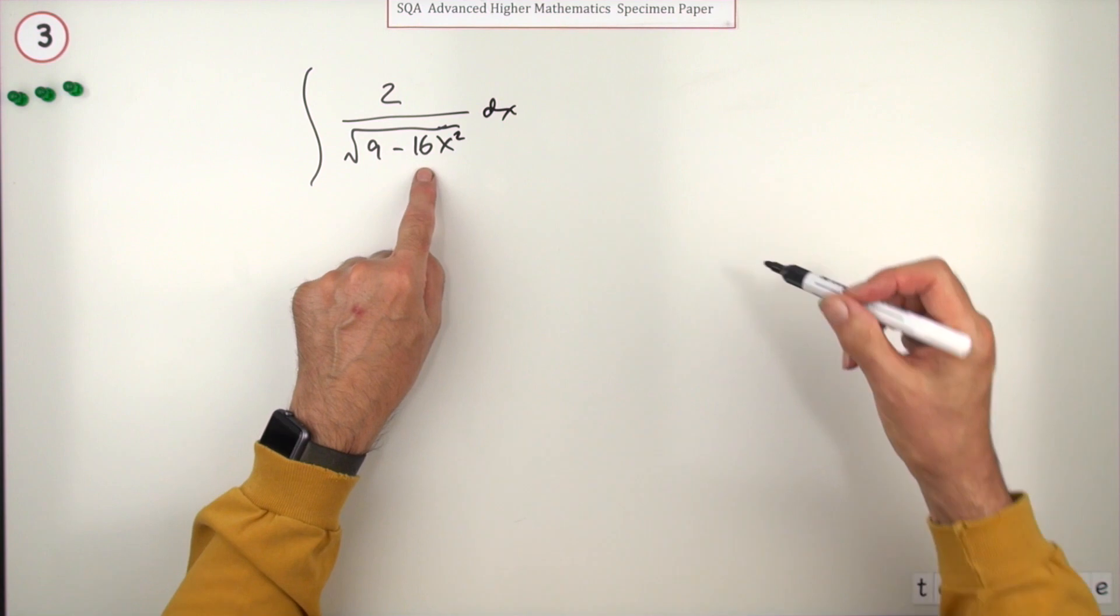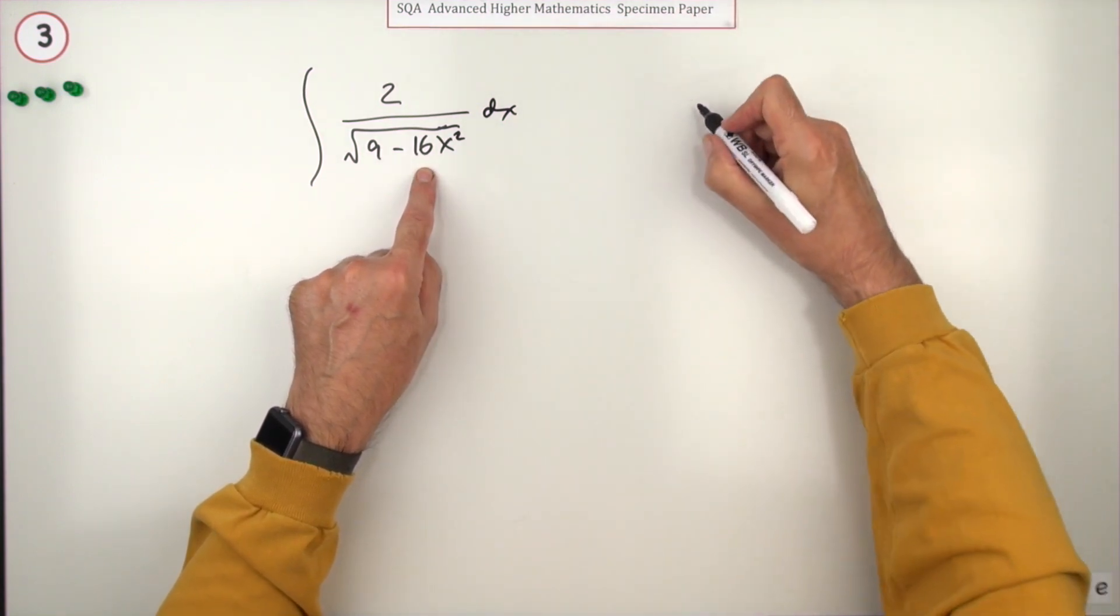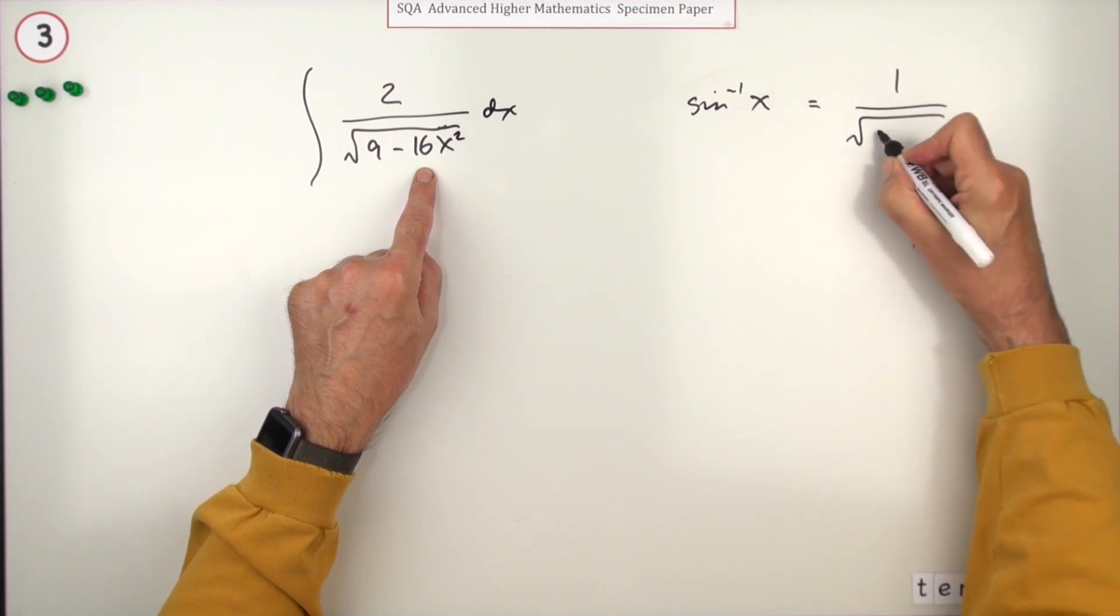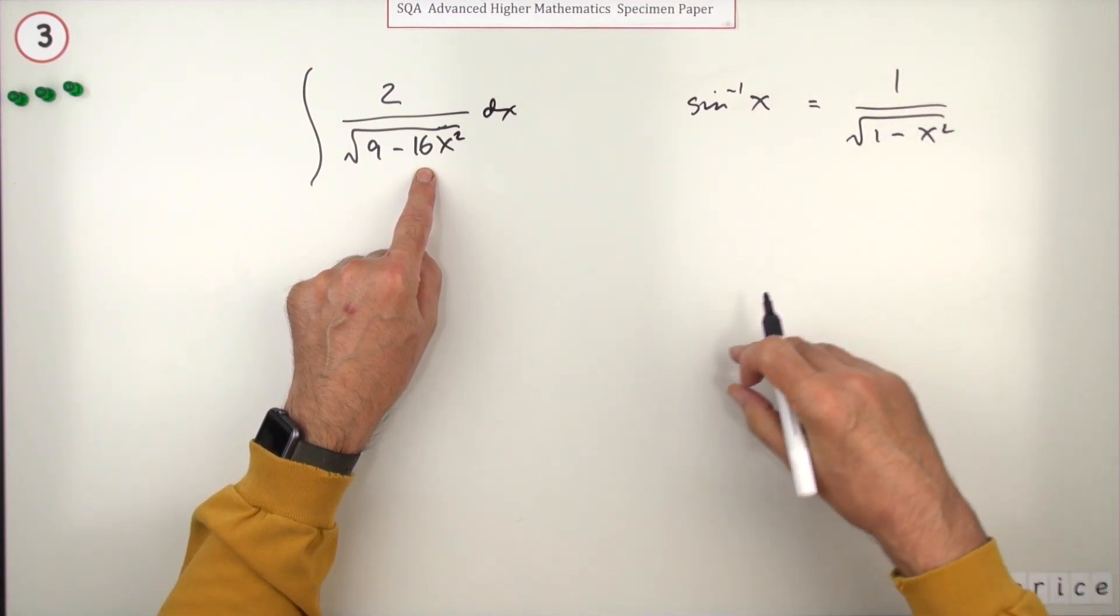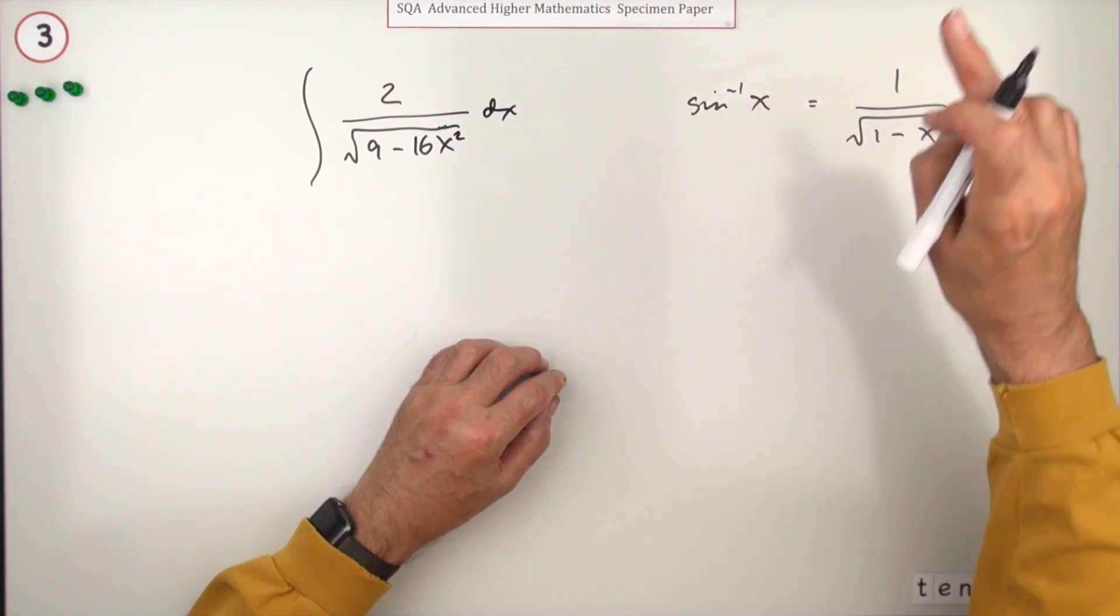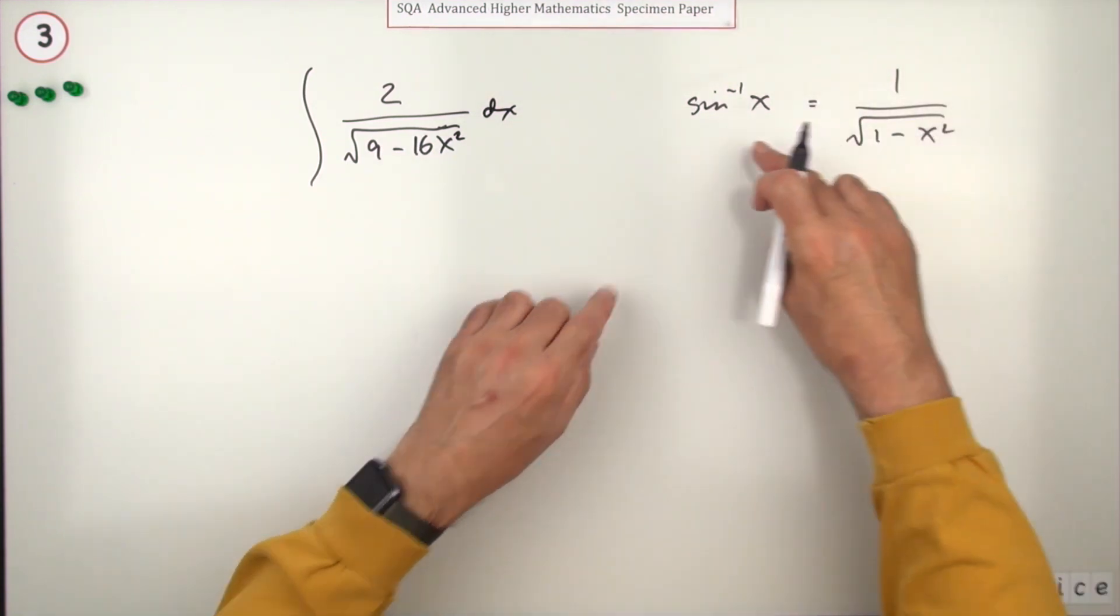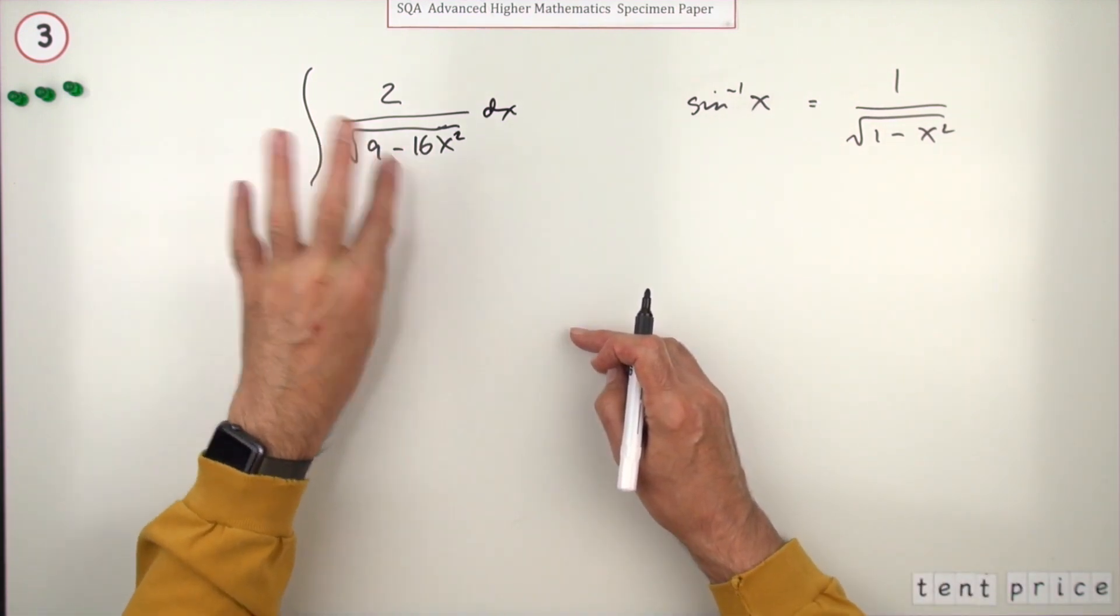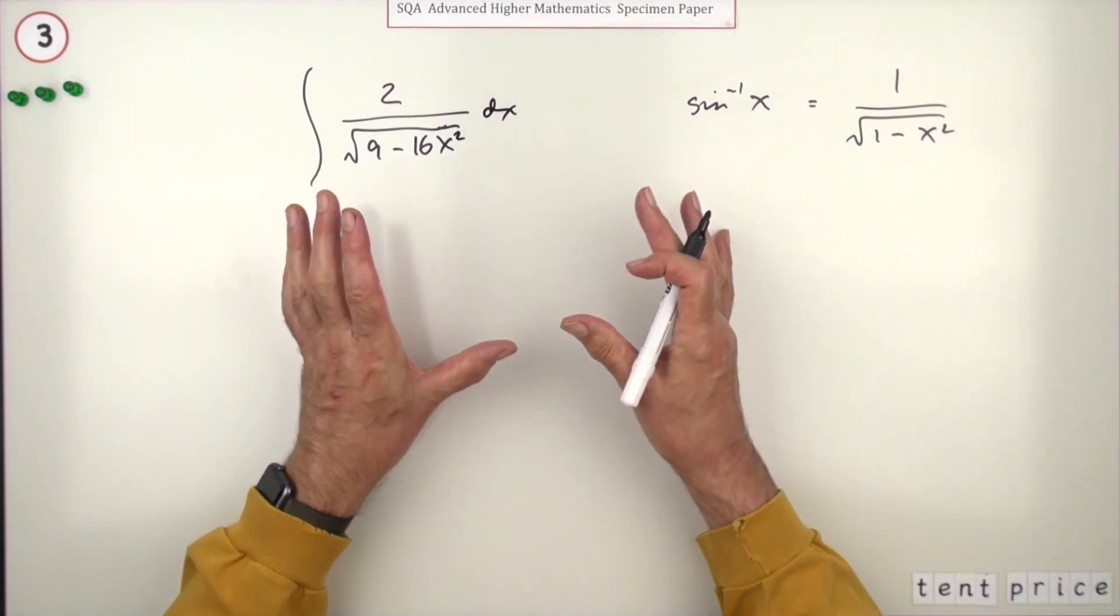One result you can see hidden in here is that the derivative of inverse sine is 1 upon the square root of 1 minus x squared. So if you could rearrange integrals to have this in it, you know the result would have been this. Normally that's what you do here - try and remove all those numbers to leave something like this.